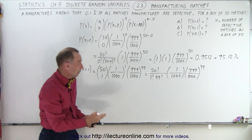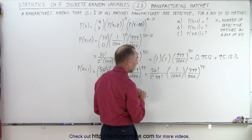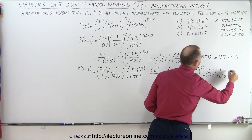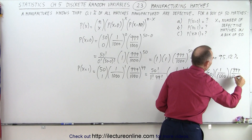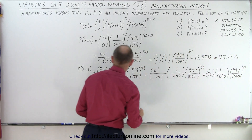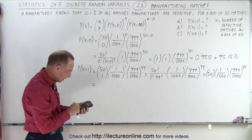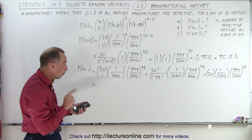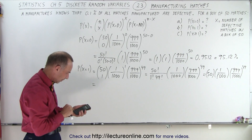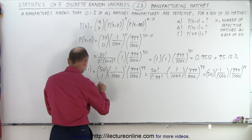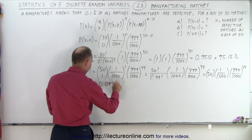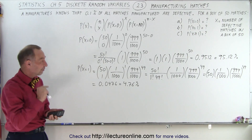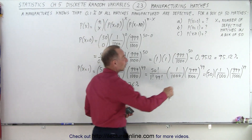Now, 50 factorial divided by 49 factorial simply equals 50, because 49 times 48 times 47 and so forth cancels out in the denominator. So this equals 50 times 1 over 1000 times 999 over a thousand raised to the 49th power. Using the calculator: 999 divided by 1000 raised to the 49th power, times 50, divided by 1000, gives 0.0476, which is 4.76%.